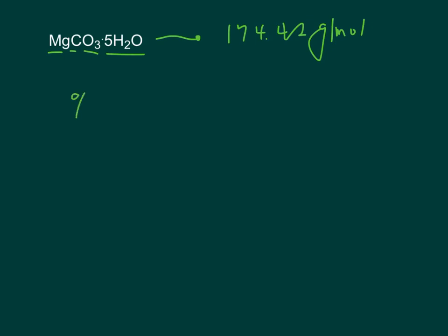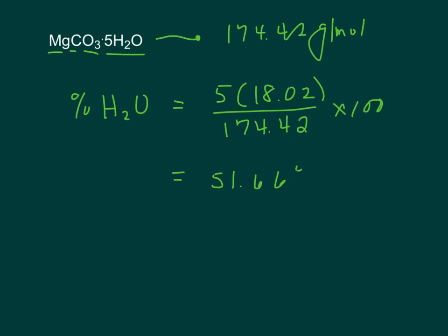So the part, percent water, the part is there's 5 waters. Each one's 18.02, divided by the whole, 174.42 times 100. And this comes out to be 51.66% water. And that's all there is to finding the percentage of water in a hydrate. Thank you.